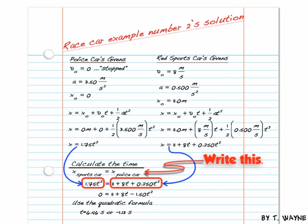You can probably use other methods, completing the square, anything you want to finish solving this. And I get two times. I get a negative 1.3 seconds, and I get a positive 6.46 seconds. So the positive answer is the one I'm after in this case.